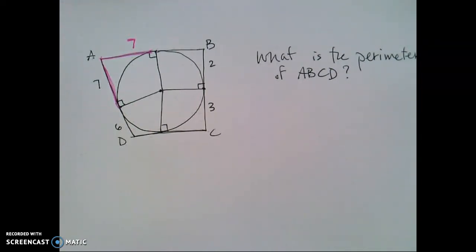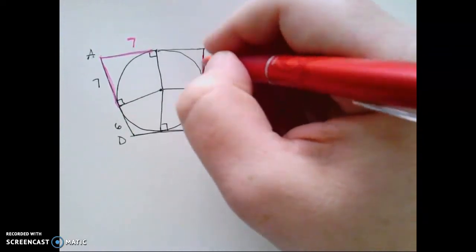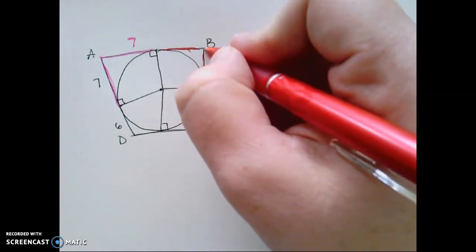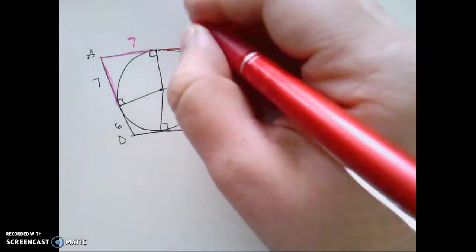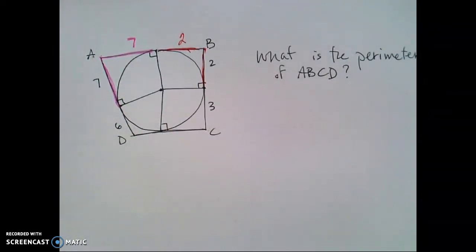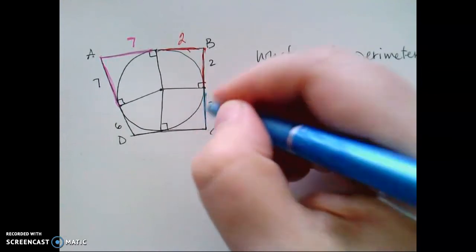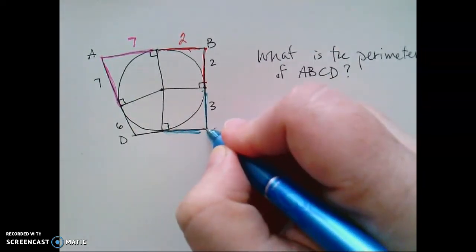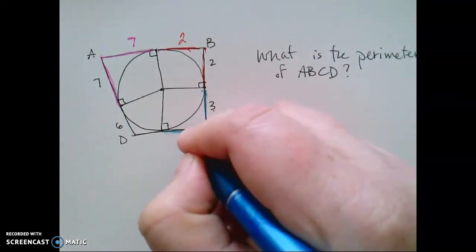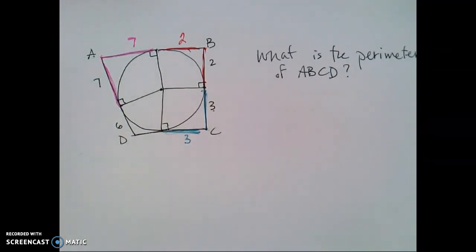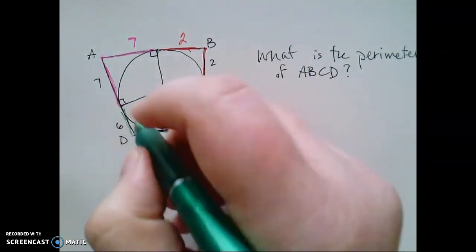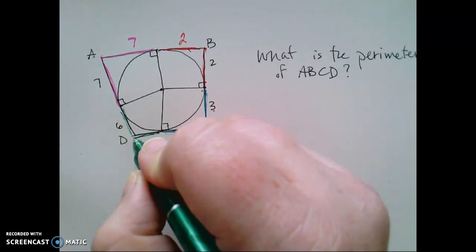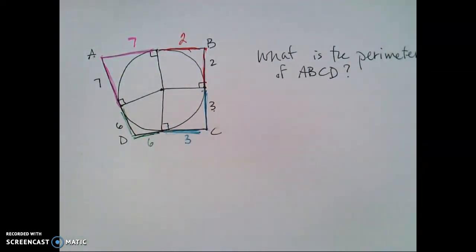So same thing over here for B, that this segment and this segment are both tangent to the circle. They meet at that same exterior endpoint. So if this segment's two, then this segment is also two. This segment and this segment are both perpendicular to the circle, which means they're tangent, meeting at a common endpoint. So if this segment is three, this segment is also three. And then finally, this segment and this segment are both tangent to the circle with a common exterior point. So if this segment is six, this segment is also six.